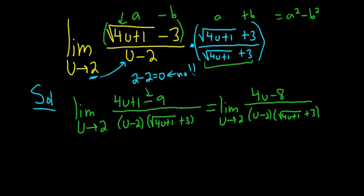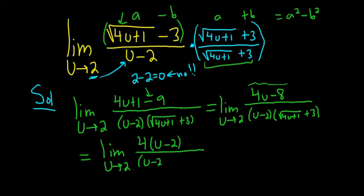We still have a problem, because if we plug in 2, we get 0 on the bottom. However, you'll notice that we can factor out a 4 from the numerator. So we get 4 times u minus 2, all being divided by u minus 2 times square root 4u plus 1 plus 3. And this is where the magic happens, because the u minus 2 cancels.